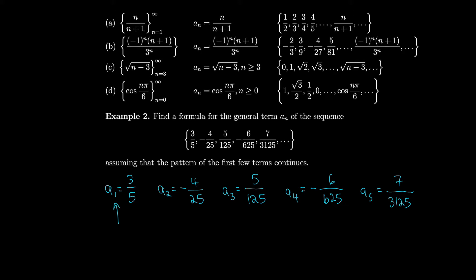When n=1 we have 3 in the numerator; n=2 gives 4; n=3 gives 5; n=4 gives 6; n=5 gives 7. So the numerator is n+2. In the denominator the pattern is 5, 25, 125, 625 — that is, 5^1, 5^2, 5^3, 5^4 — so the denominator is 5^n.